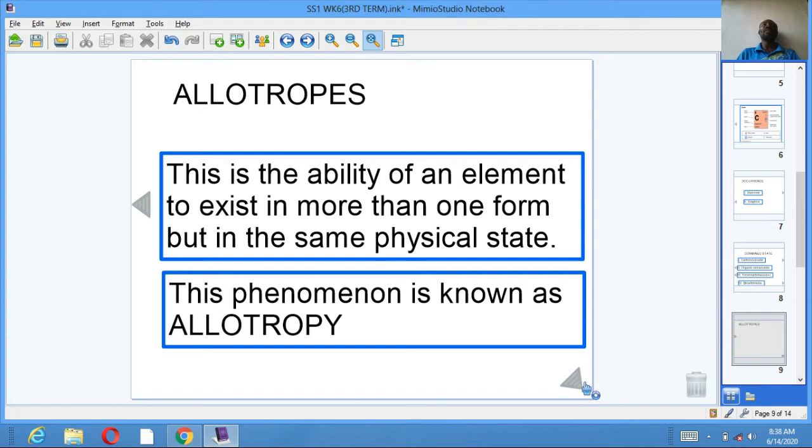Carbon exhibits allotropes. Other elements that exhibit allotropes are silicon, oxygen, sulfur, and phosphorus.